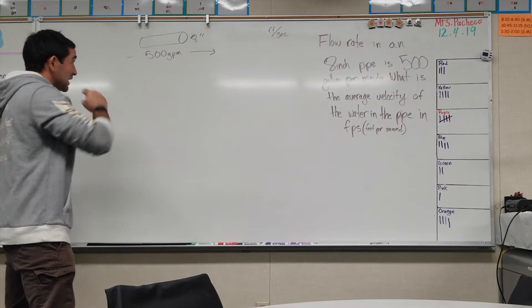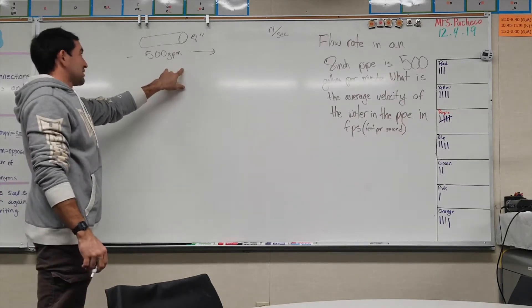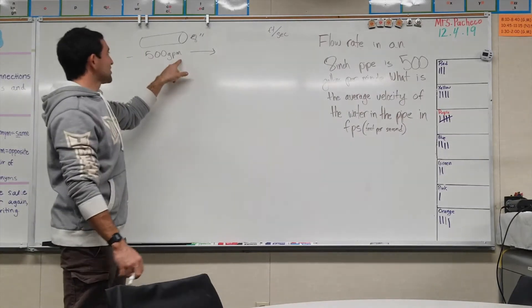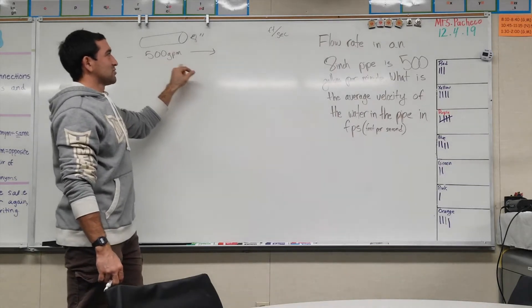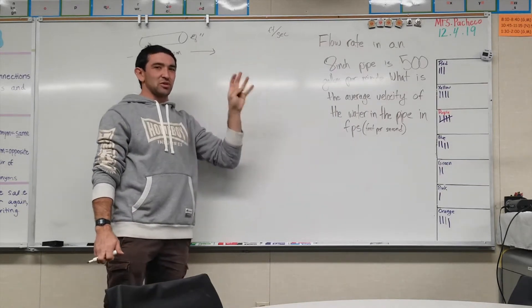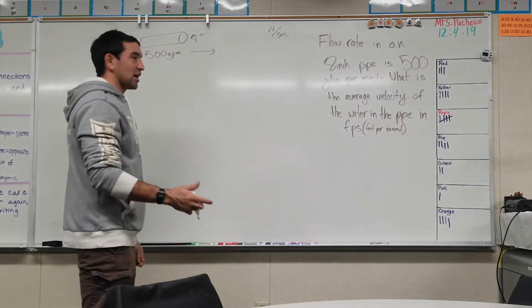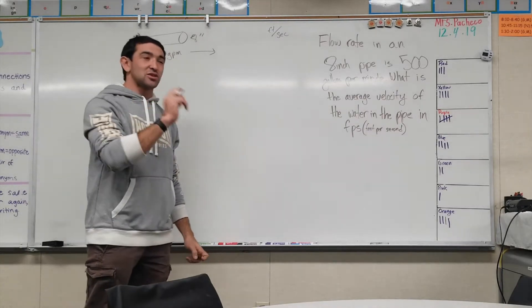We have gallons per minute, which sounds pretty similar to feet per second. We have a unit of time and we have gallons which we can get to cubic feet because we know how many cubic feet are in a gallon.